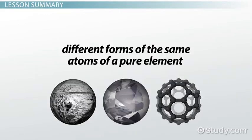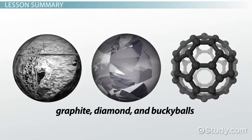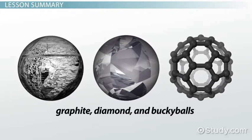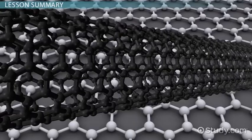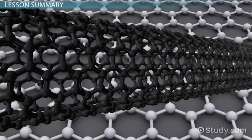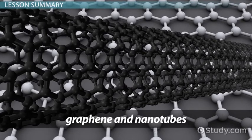Different forms of the same atoms of a pure element are known as allotropes, and their structure often affects the properties that the allotropes exhibit. Graphite, diamond, and buckyballs are all allotropes of carbon, yet they exhibit very different structural shapes and properties. Researchers are still learning about new allotropes of carbon, such as graphene and nanotubes, and they continue to study the applications of these forms of carbon daily.